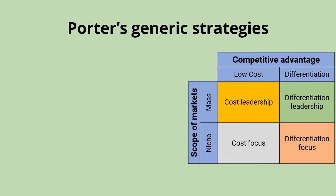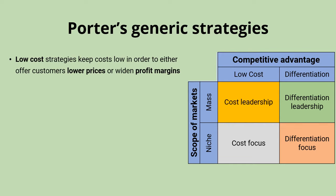Looking at the low cost half of the matrix first, what we're doing with that is trying to keep costs as low as possible. Generally speaking, that's going to enable us to offer customers lower prices, and that's how we get that competitive advantage. We stand out from rivals by being really efficient, driving down costs, and charging lower prices to customers.